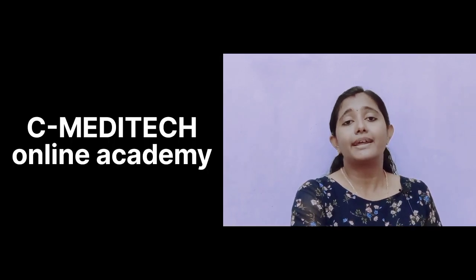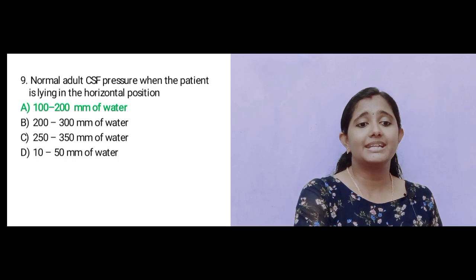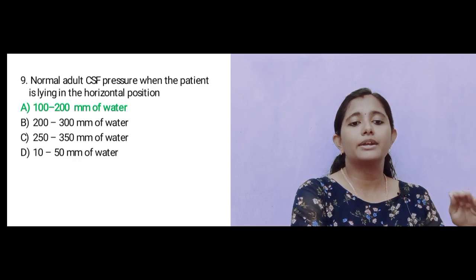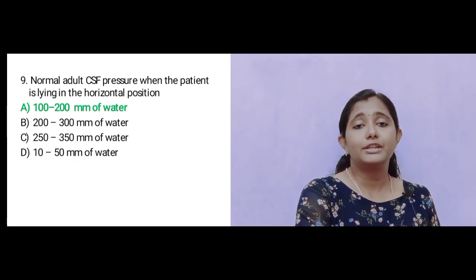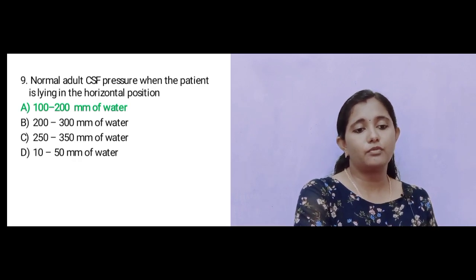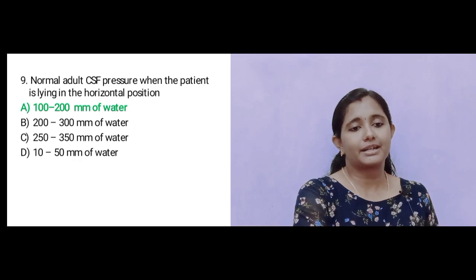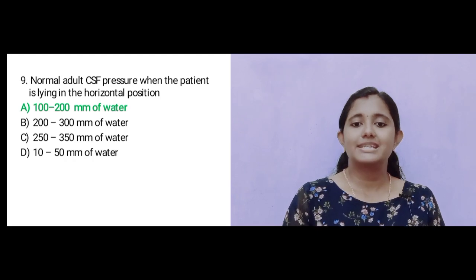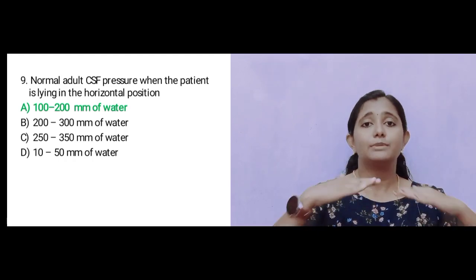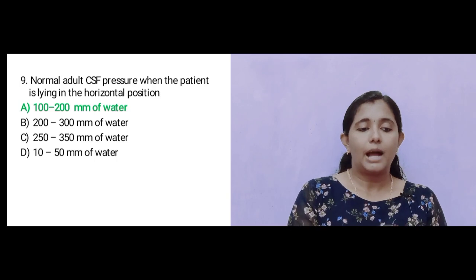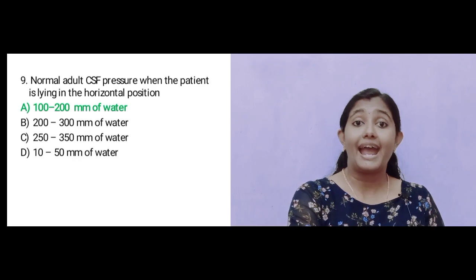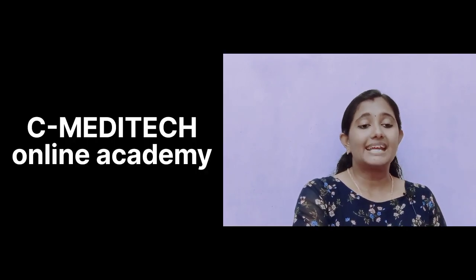Question number 9: Normal adult CSF pressure when the patient is lying in the horizontal position — Option A: 100 to 200 mm of water; Option B: 200 to 300 mm; Option C: 250 to 350 mm; Option D: 10 to 50 mm. The answer is Option A: 100 to 200 mm of water.